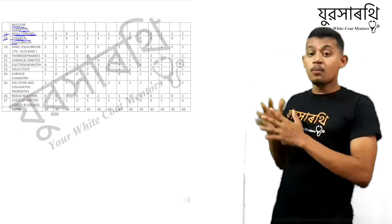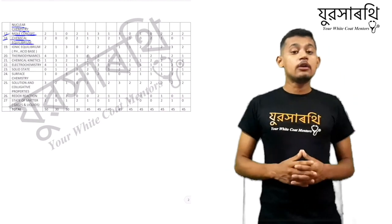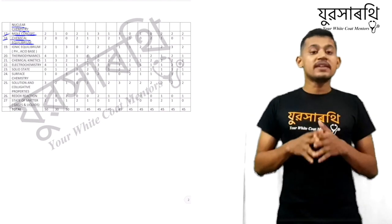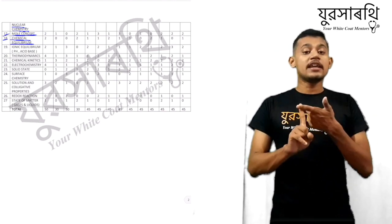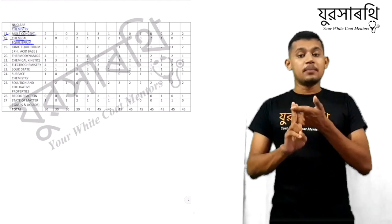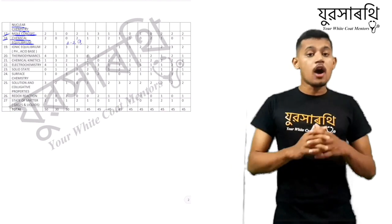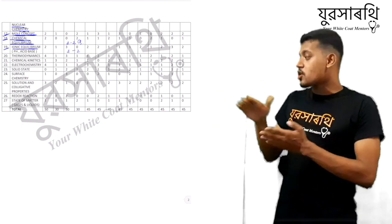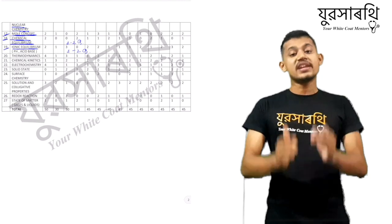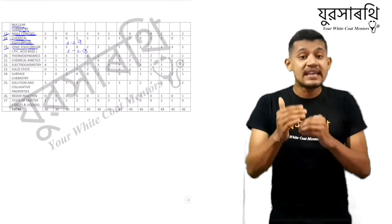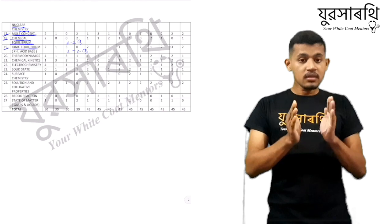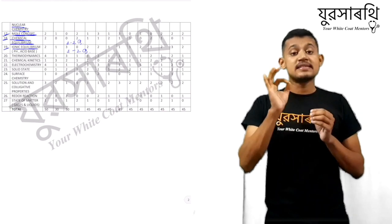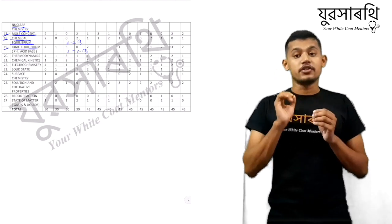After mole concept we have chemical equilibrium. The equilibrium chapter is divided into two portions: chemical equilibrium and ionic equilibrium. From chemical equilibrium they ask around one to two questions every year, and from ionic equilibrium they also ask one to two questions every year. So studying the chemical equilibrium chapter, you can fetch 8 to 12 marks in your exam — it is a very important chapter from an exam point of view.